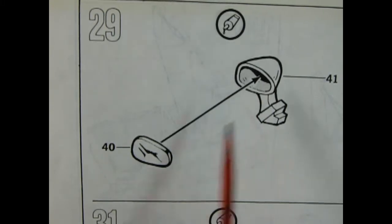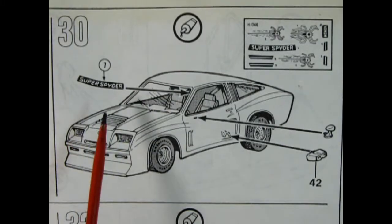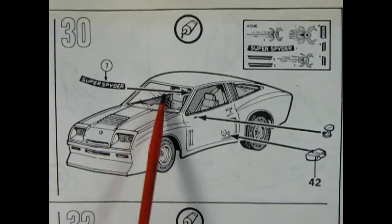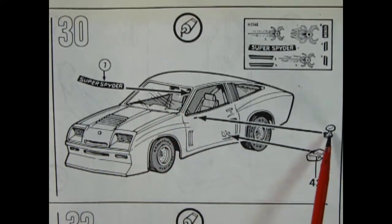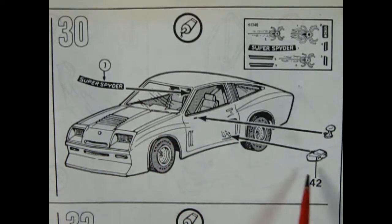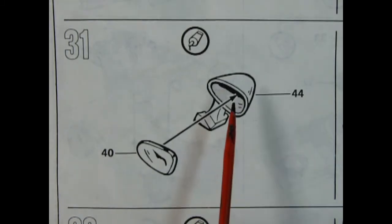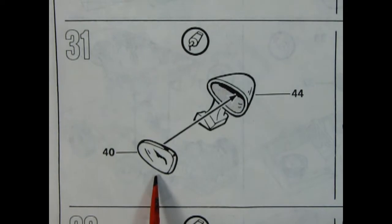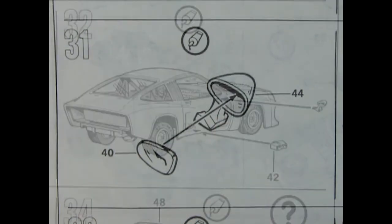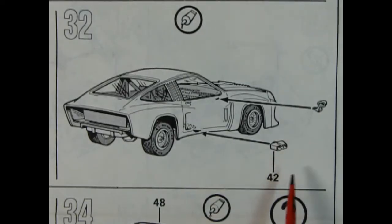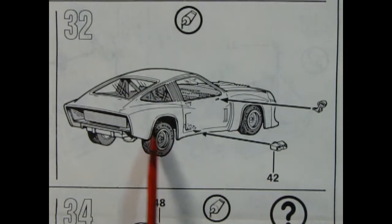Panel 29 shows our mirror getting glass put in it. Panel 30 shows our Super Spider decal being put in place on the window, as well as our mirror being glued in place and this cool side exhaust dump. So let's glue our other mirror together: there's the outer housing and mount and our glass being glued into place. Panel 32 shows our mirror and the other exhaust dump being glued on.